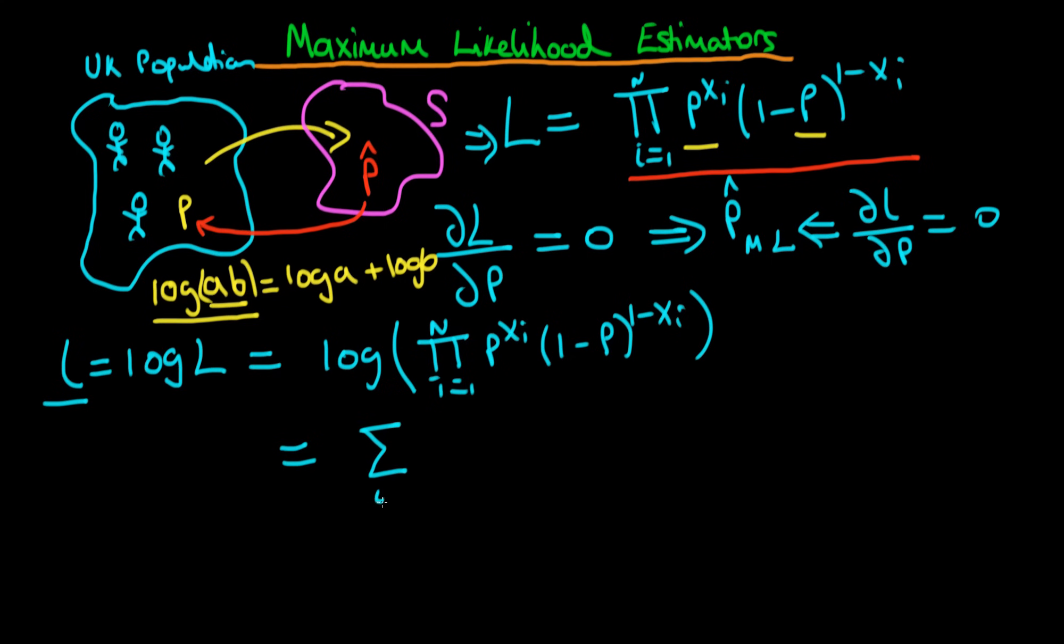So what's going to happen here is this log of this whole thing is just going to convert to a sum. So we're going to be left with the sum from i equals 1 to n of log P to the power xi times 1 minus P to the 1 minus xi. So our log transformation has converted something which was quite hard to differentiate, a product, into something which is really easy to differentiate because a sum is much easier to differentiate than a product.